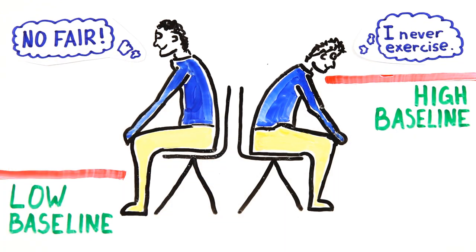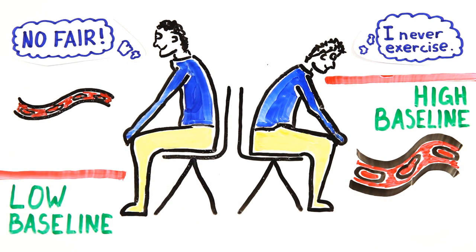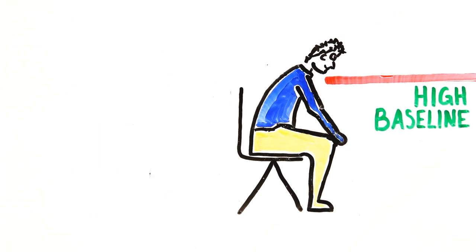It turns out, a different set of genes gives some people a higher baseline. In the case of endurance, these genes can code for larger volumes of blood which are generally only seen in trained athletes.